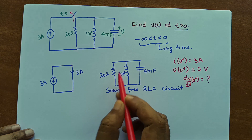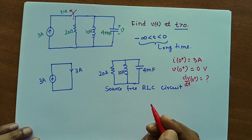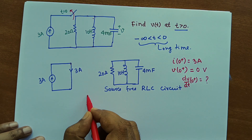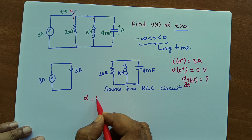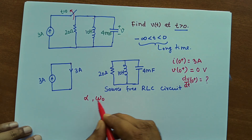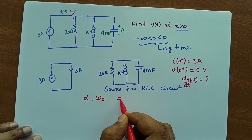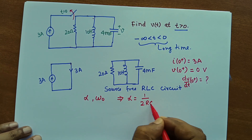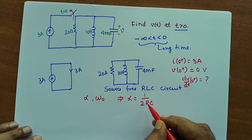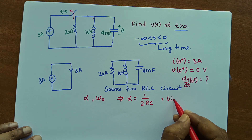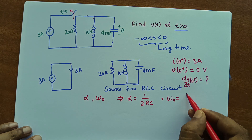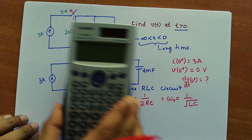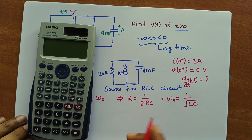Since we have a parallel RLC circuit, we know the solution in the form of calculation of alpha and omega_0. Alpha equals 1/(2RC) for a parallel RLC circuit, and omega_0 is given as 1/√(LC). Here we will calculate the values of alpha and omega_0.